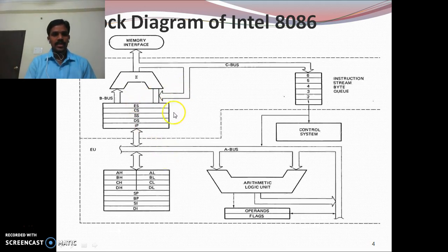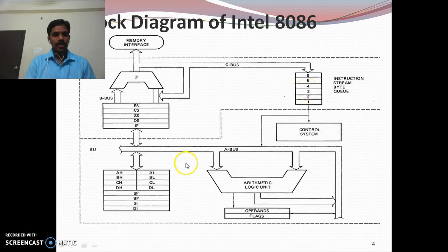The Bus Interface Unit has different parts: the segment register, the instruction pointer, the address calculator, and the instruction queue. Coming to the Execution Unit, it contains the general purpose registers, the arithmetic and logic unit, the flag register, and the control unit.